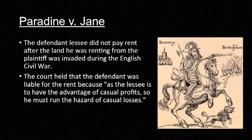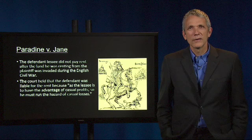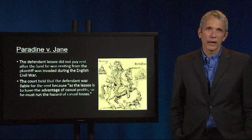Among other reasons, the court in Paradine v. Jane reasoned that, as the lessee is to have the advantage of casual profits, so he must run the hazard of casual losses. In other words, if the plaintiff is able to retain the unexpected benefits from renting the land, such as a bumper harvest, the plaintiff should also bear the unexpected losses.